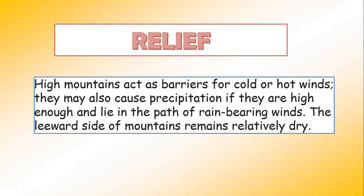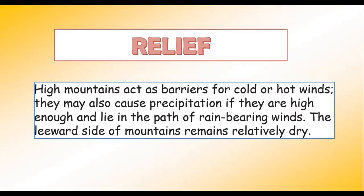Can you name the six major factors that control the climate of any place? Quickly take a pen and paper and write it down. The six major controls of the climate of any place are: latitude, altitude, pressure and wind system, distance from the sea, ocean currents, and relief features.